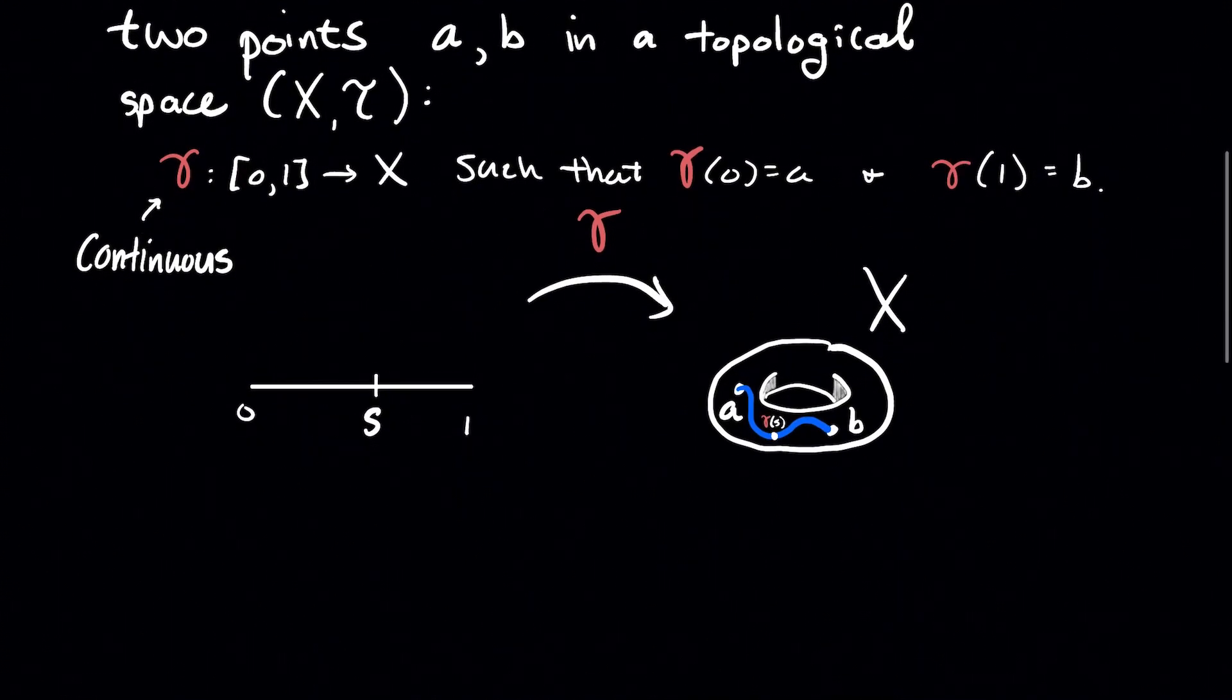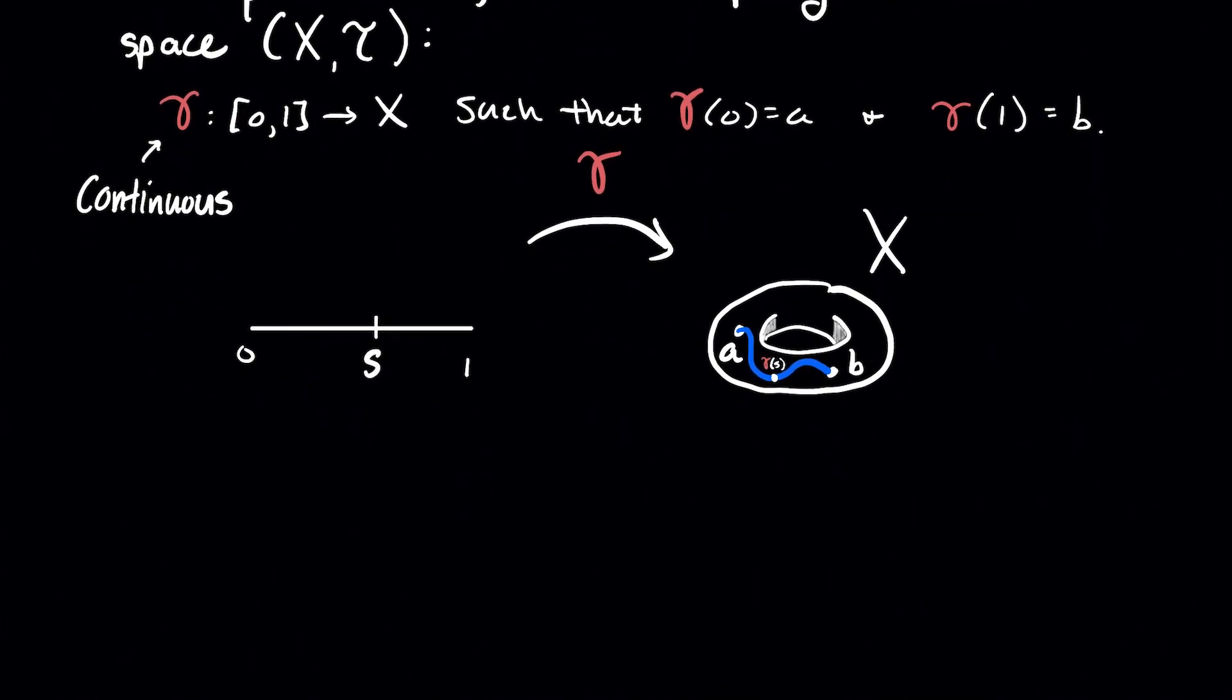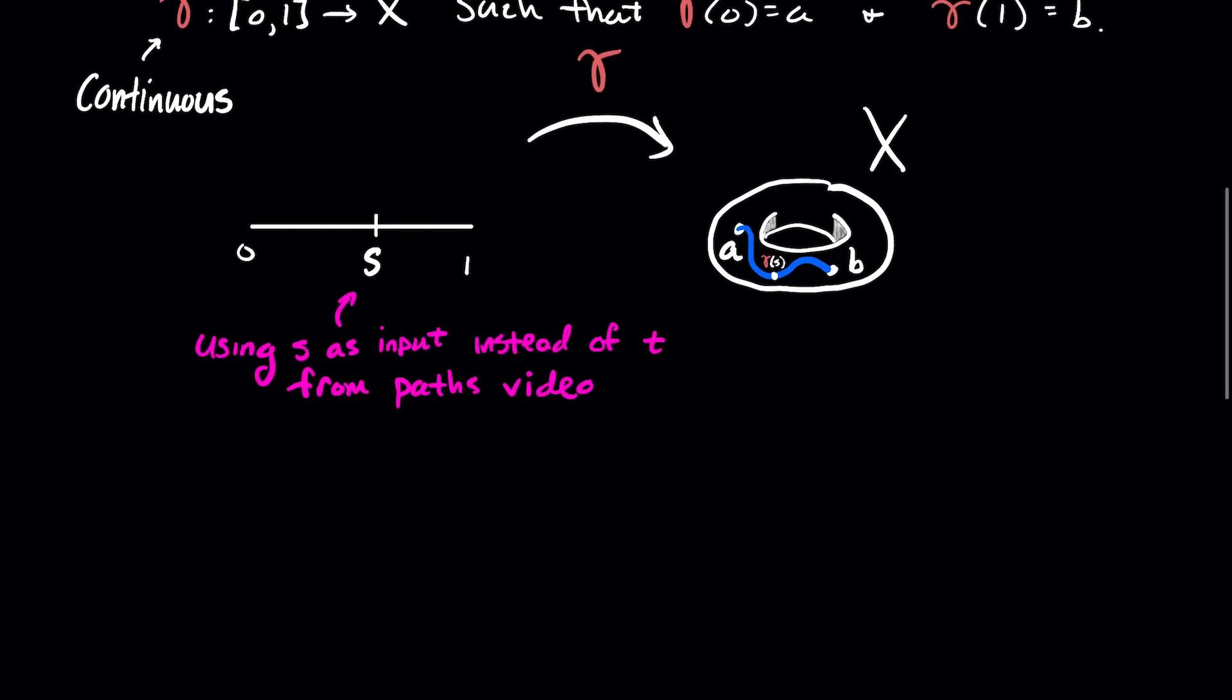I had a little picture just to give us an idea of what gamma does. Again, take a real number between 0 and 1 and it outputs a point in your topological space. Here notice if you watched the previous video I used T as the input for the path, now I'm using S as the input for the path so I will use S as the path's input for this entire video.